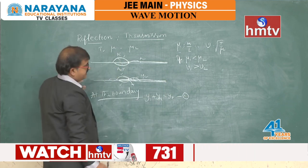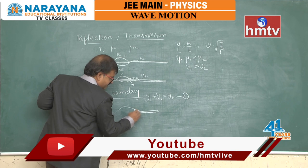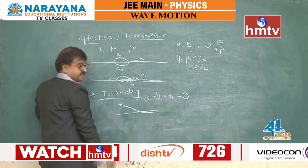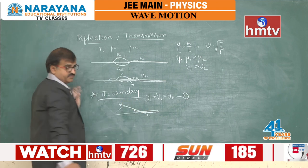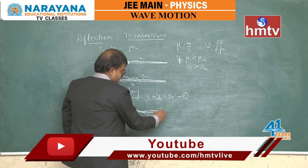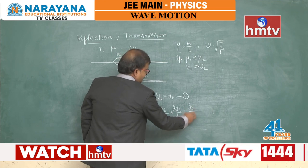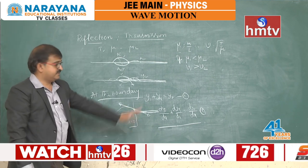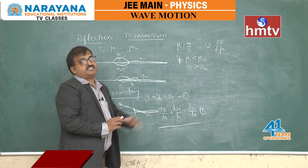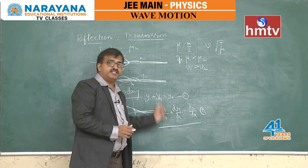The second boundary condition is that the slope of the string must also be continuous at the junction: dyi/dx + dyr/dx = dyt/dx at x = 0. These two conditions — continuity of displacement and continuity of slope — are the boundary conditions that must be obeyed whenever a wave is transmitted at a junction, whether from thin to thick or thick to thin string.